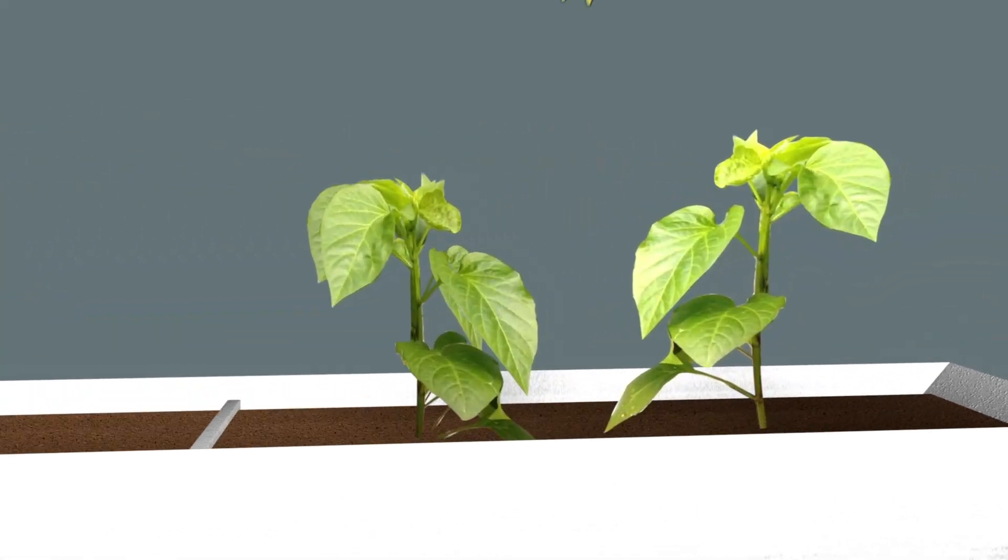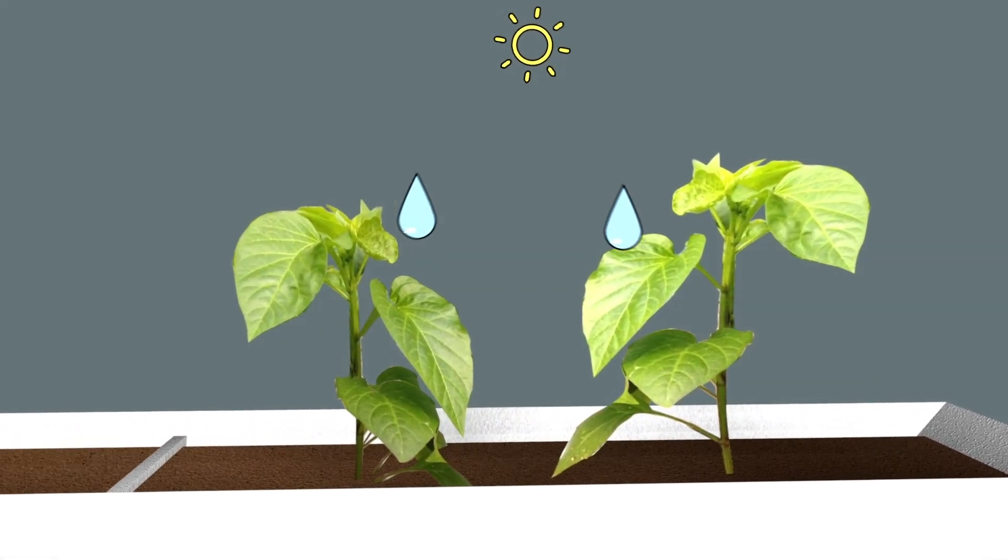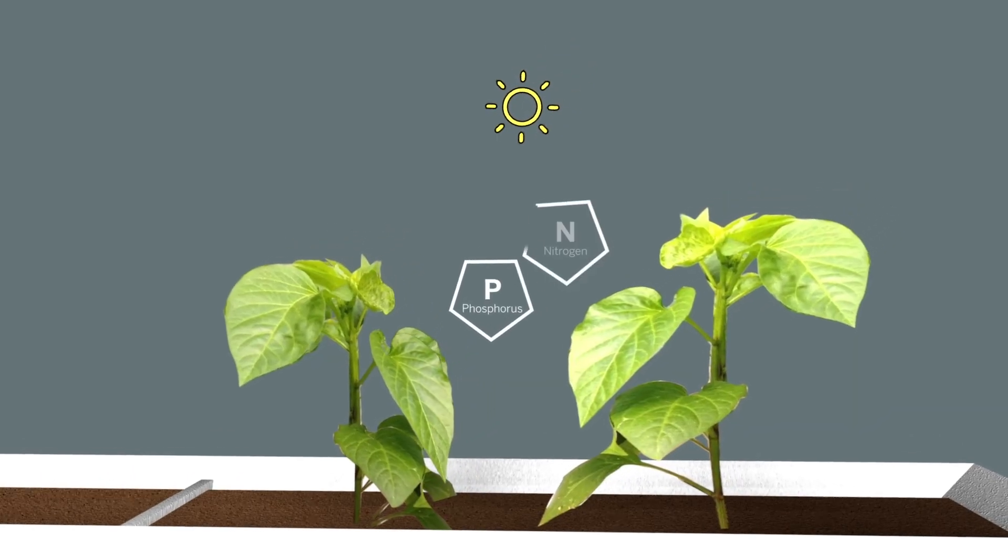All of the plants were given equal access to light and water, as well as fertilizer rich with phosphorus, nitrogen, iron, and other key nutrients.